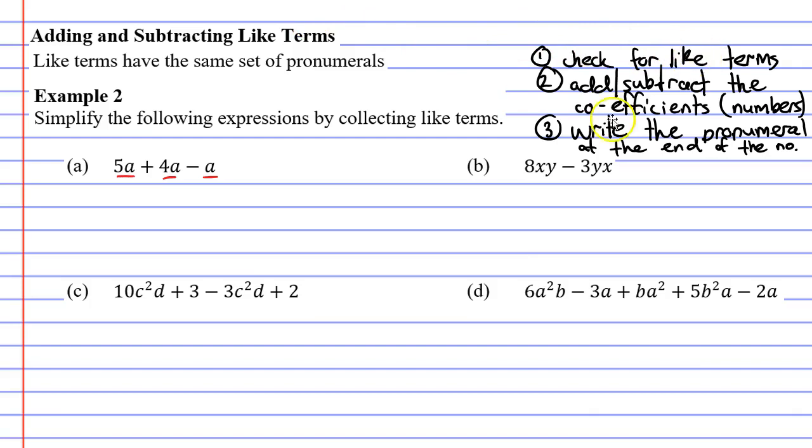We're now going to add and subtract the coefficients. So if we look here we've got a coefficient of 5, a coefficient of 4, and it looks like we don't have a coefficient here. Now when there's no coefficient there's technically a number 1. So we're going to put that there and we're going to add or subtract these coefficients. 5 plus 4 is 9 minus 1 is 8. Let's write that down. So we're going to write down 8.